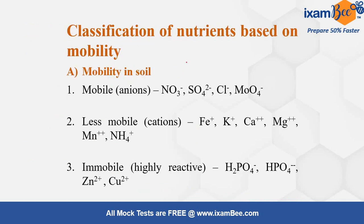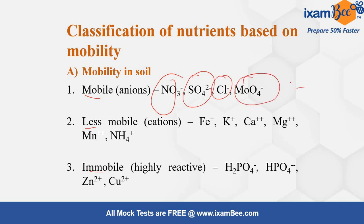On the basis of mobility in the soil, nutrients are classified into mobile, less mobile, and immobile. Mobile ions (all anions) are: Nitrate, Sulfate, Fluoride, and Molybdenum. Less mobile are the cations: Fe⁺, K⁺, Ca²⁺, Mg²⁺, Mn⁺, and NH₄⁺. Immobile ions are: H₂PO₄⁻, HPO₄²⁻, Zn²⁺, and Cu²⁺.